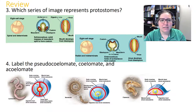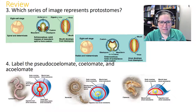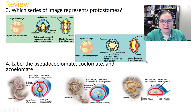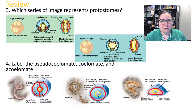Looking at pictures for question three: which series represents protostomes? The key is to look at the blastopore. In the first series, the blastopore becomes the mouth — that's protostomes. In the second series, the blastopore becomes the anus — that's deuterostomes.